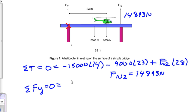So we'll let that equal force normal 1 going upwards. And then plus the 14,893, because that's also pointing upwards. And then minus 15,000 because that's downwards.